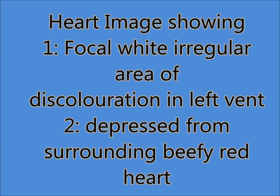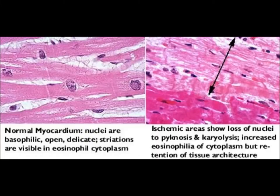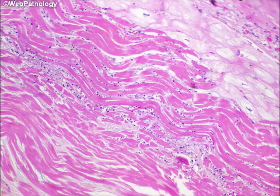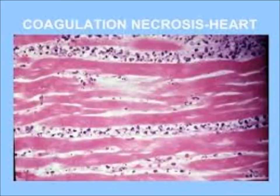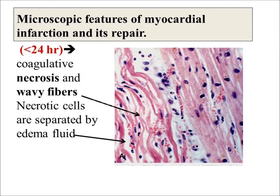Microscopically, on one side there is normal myocardium and on the other side necrosis showing increased eosinophilia. There is loss of nuclei and preservation of the architecture of the necrotic myocardium, because this preservation of architecture is the most specific feature of coagulative necrosis. There is also inflammatory cell infiltrate.